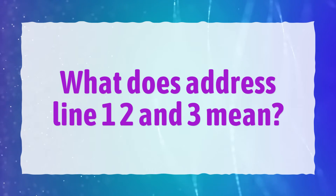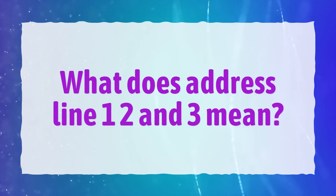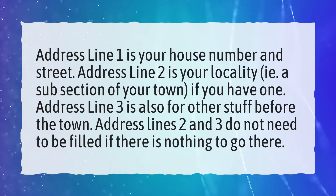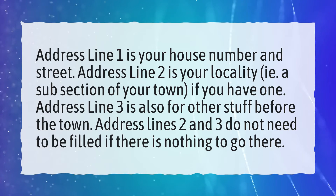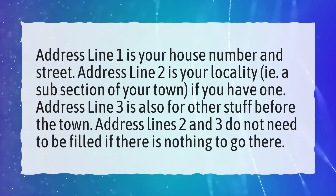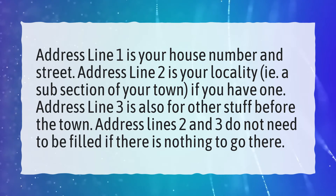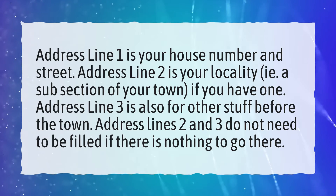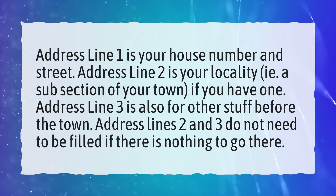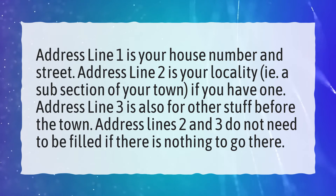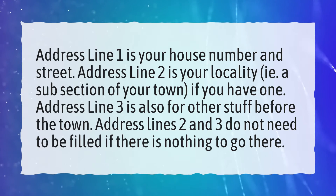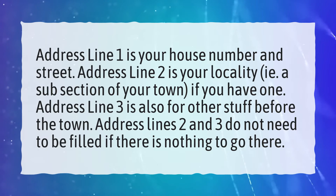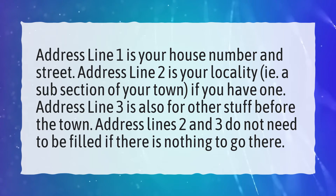What does Address Line 1, 2 and 3 mean? Address Line 1 is your house number and street. Address Line 2 is your locality, i.e. a subsection of your town, if you have one. Address Line 3 is also for other stuff before the town. Address Lines 2 and 3 do not need to be filled if there is nothing to go there.